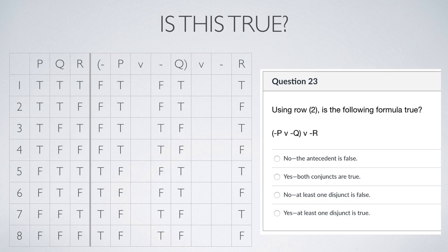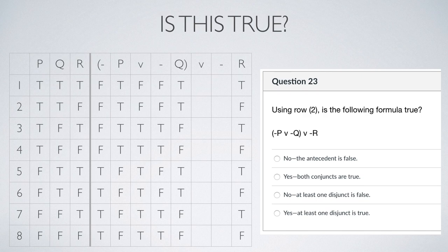We find the truth value for the complex proposition. A quick shortcut: deal with one side at a time so you don't drive yourself nuts. The truth condition for disjunction is that at least one disjunct is true. Look at the q side — find the trues and fill those in, then do the same for p. There's some overlap, but quickly get those trues in, and then you identify the two rows where both disjuncts are false.